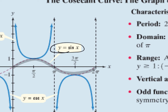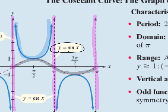Everywhere this curve crosses the x-axis, that's a value of zero. What's the reciprocal of zero? One over zero, which is undefined. Undefined means you can't have a point there, and that's where these asymptotes come from — everywhere there was an x-intercept, there's now an asymptote. Then these parabola shapes bounce off those curves. That's how we draw cosecant.